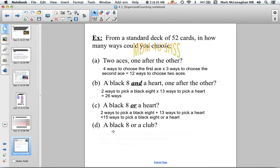Last example looks very similar but is slightly different. We have a black eight or a club. There's two ways of picking a black eight, 13 ways of picking a club. But wait—one of the black eights is a club, so we have to subtract that. We have 2 + 13 - 1 = 14 ways of picking a black eight or a club.